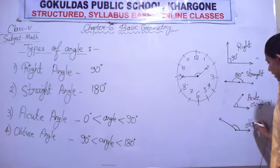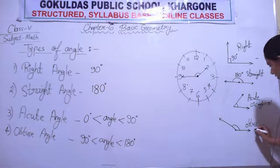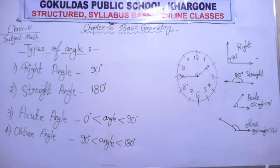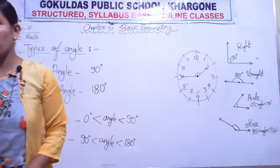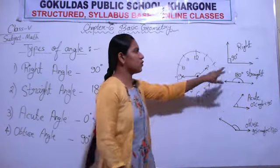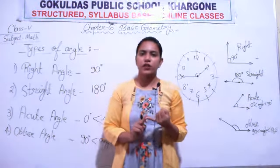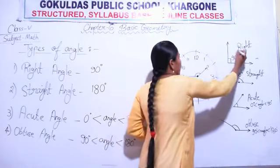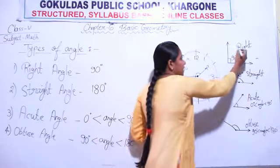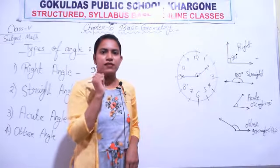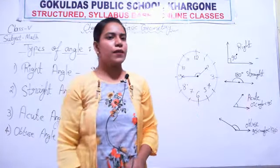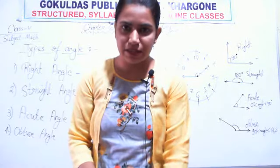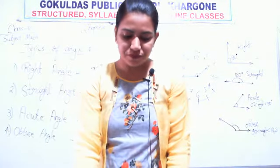Such an angle is known as an obtuse angle — its measure is more than 90 degrees and less than 180 degrees. We always measure angles in degrees. The unit of angle is degree, and we denote it by a small symbol on the top right of the number. Just as we measure length in meters, centimeters, or kilometers, we measure angles in degrees.